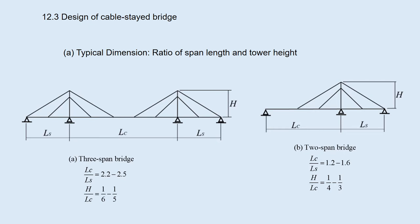For 2-span bridge, LC over LS is from 1.2 to 1.6, H over LC is 1.5 to 1.3.